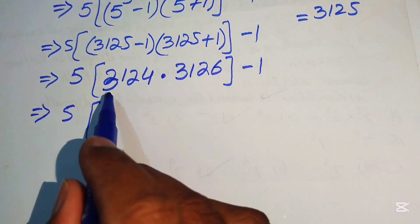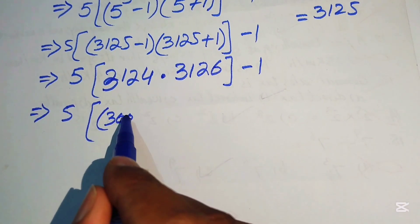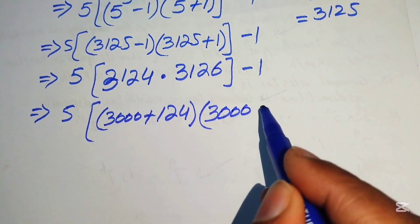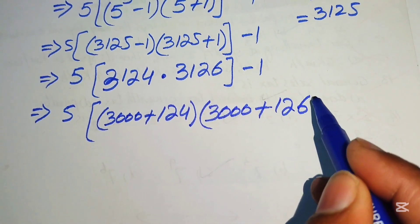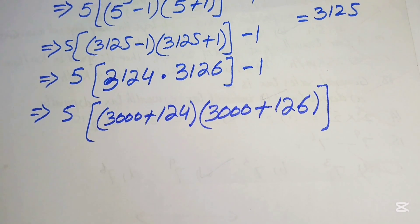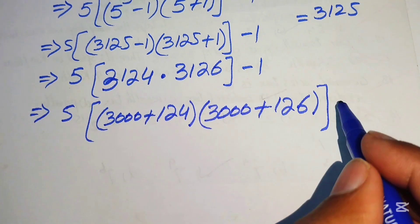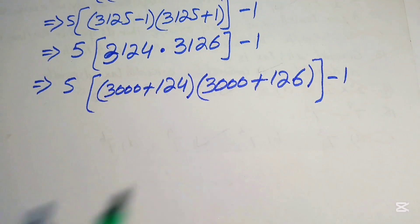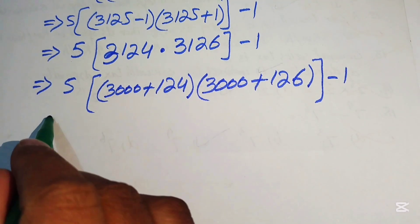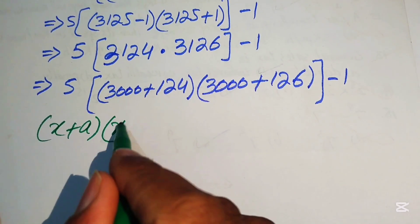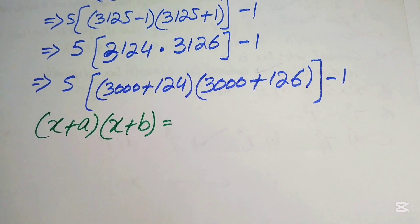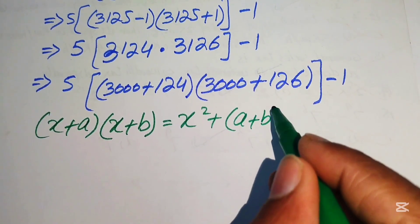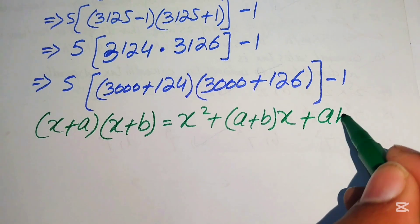We write 3124 as 3000 plus 124, and 3126 as 3000 plus 126. We now apply the algebraic formula: (x + a)(x + b) = x² + (a + b)x + ab, where x equals 3000, a equals 124, and b equals 126.